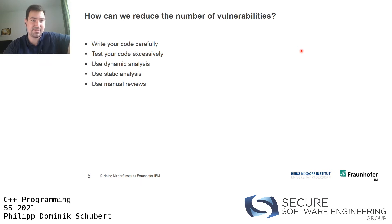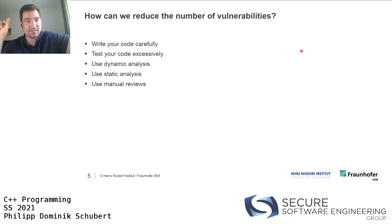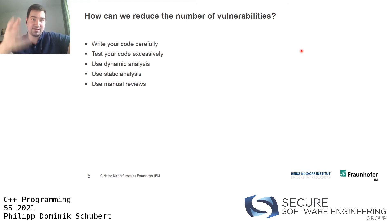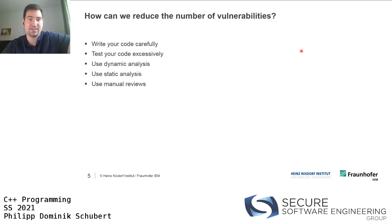Manual code reviews are hopefully standard nowadays. You develop your code in a version control system like Git, on a platform such as GitHub or GitLab. You develop new features in small commits, push them into a development branch via a pull request, add a reviewer who gives feedback, and only if they give their okay is the code merged with the master or development branch.